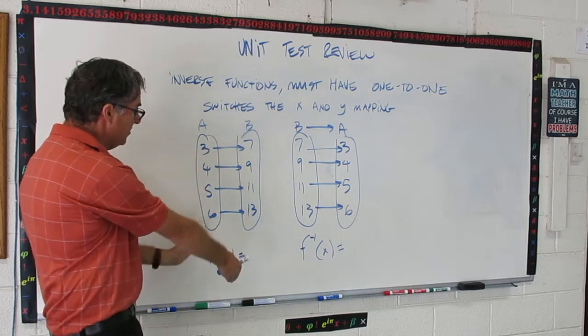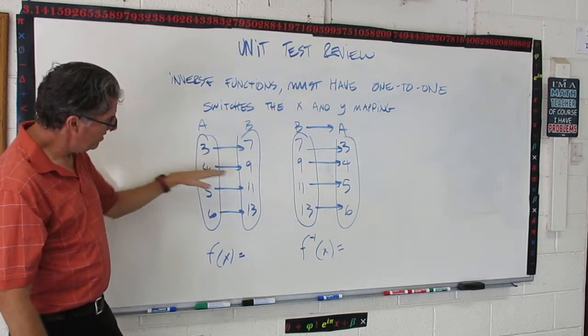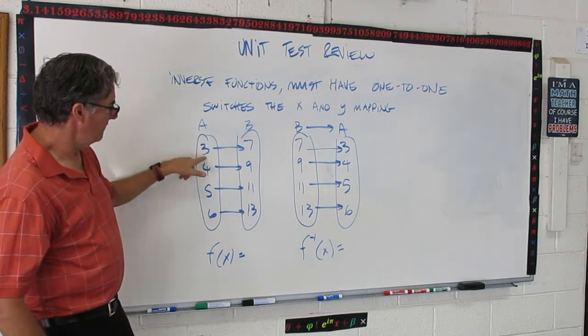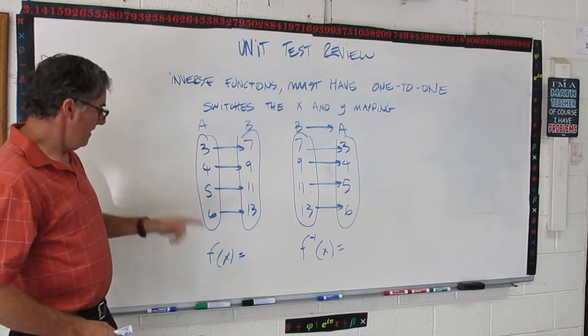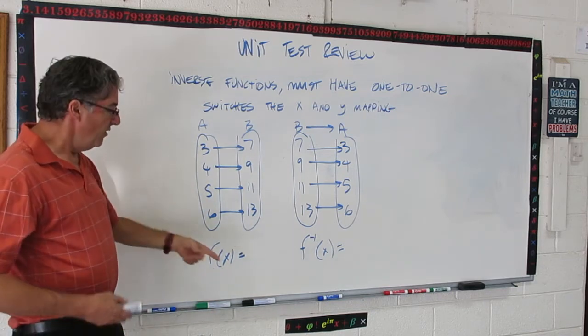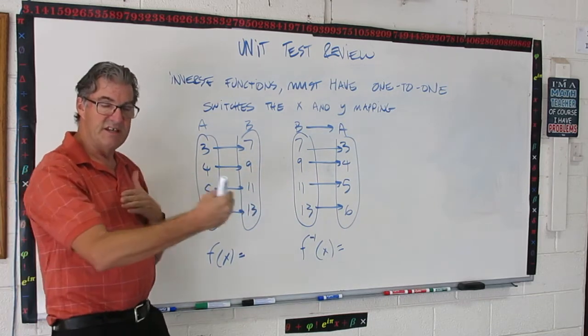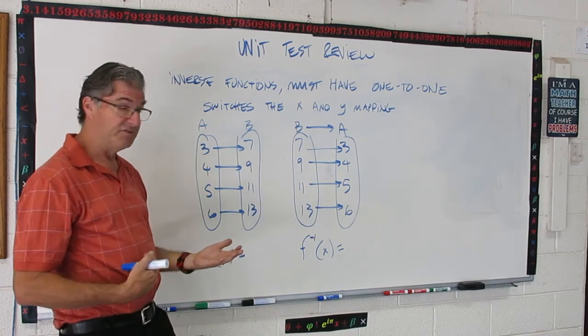So, I have my mapping notation with a mapping onto b. This is one-to-one. You can see my arrows go straight across. There's no many's in there, and we get from 3, we get 7, and so on and so forth. Perfect. Okay. Now, this is f of x. So, f inverse of x just switches the x and y, switches the input and the output, switches the independent and the dependent variables.